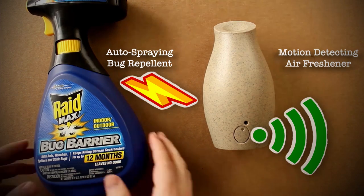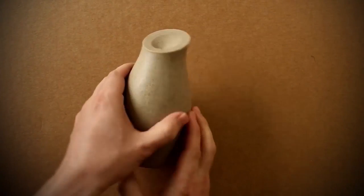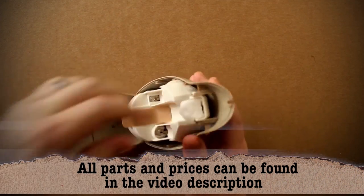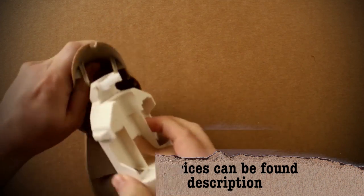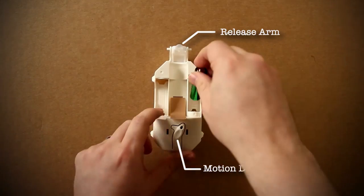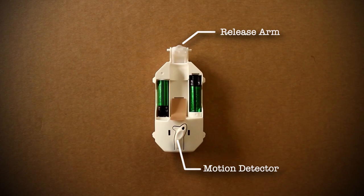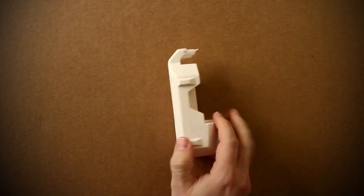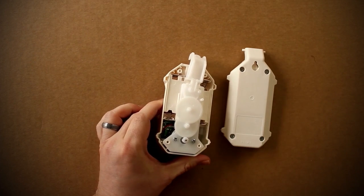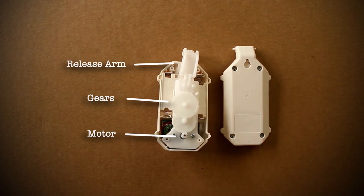As all good hackers do, let's take everything apart, starting with the air freshener. The premise of how this works is that it has a sensor on the front that detects movement and then triggers this arm to go down. If you remove the batteries and the back screws, you can see that it does this with a motor and a bunch of gears.